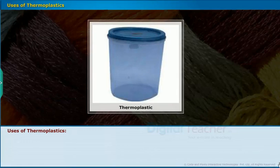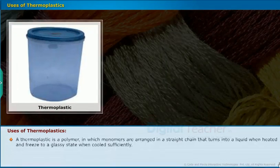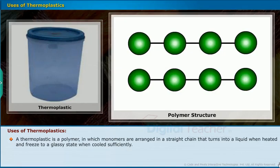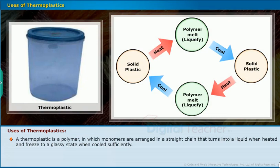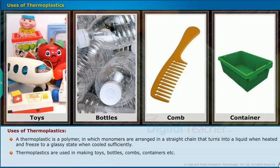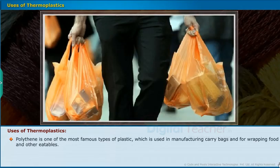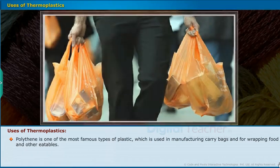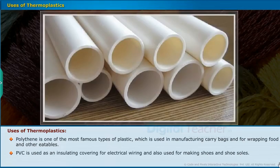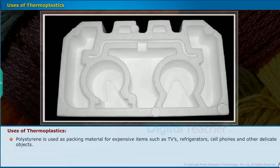Uses of Thermoplastics: A thermoplastic is a polymer in which monomers are arranged in a straight chain — it turns into a liquid when heated and freezes to a glassy state when cooled. Thermoplastics are used in making toys, bottles, combs and containers. Polythene is one of the most famous types, used for manufacturing carry bags and wrapping food. PVC is used as an insulating covering for electrical wiring and for making shoes and shoe soles. Polystyrene is used as packing material for expensive items such as TVs, refrigerators, cell phones and other delicate objects.